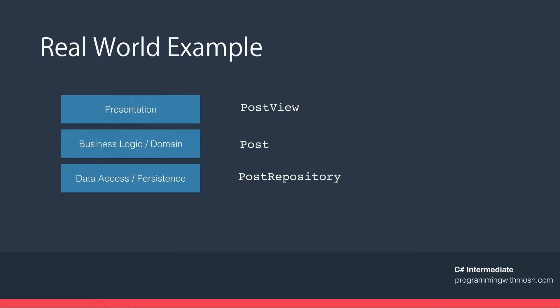Let's take a look at a real-world example. We're all familiar with blogs and posts. If we implement a web application as a blog engine with a typical layered architecture, our software consists of at least three layers: presentation, business logic (also called the domain layer), and data access (also called the persistence layer). In each layer we have classes — for example, a PostView class in the presentation layer, a Post class in the domain layer, and a PostRepository class in the data access layer. A real-world application often has hundreds or thousands of such classes.